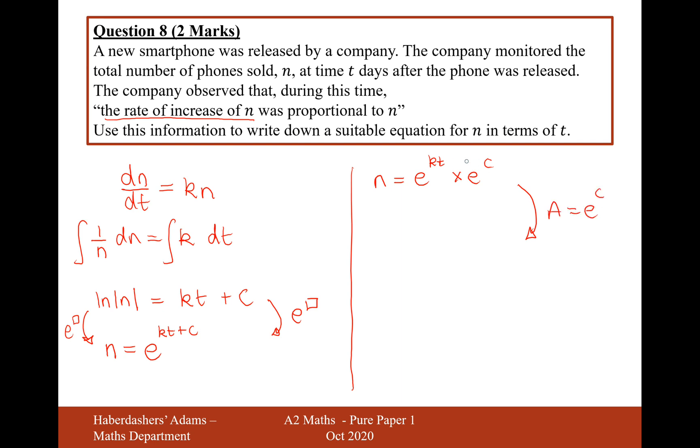So remember you can split up indices by using the same base and a multiply because when you multiply indices with the same base, you add the powers. So it's going to be n = Ae^(kt).